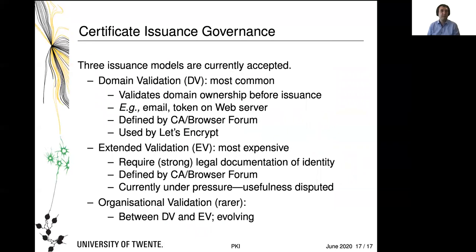Now, what about governance? In practice over the last 10 to 15 years, forums have emerged that take a steering role in the governance of certificate issuance. The most important one is probably the CA/Browser Forum, where CAs and browsers work together to agree on the steps to execute to verify the identity of an entity that wishes to be certified. At present there are three accepted issuance models. Domain validation is the most common: it prescribes that you must validate ownership of a domain before issuing a certificate to the person who claims to own it.